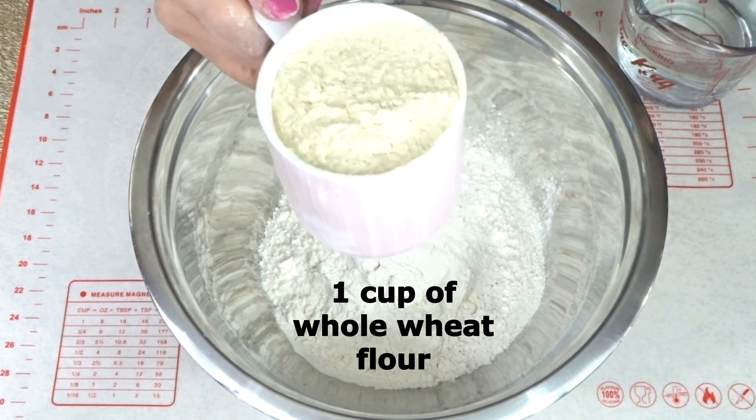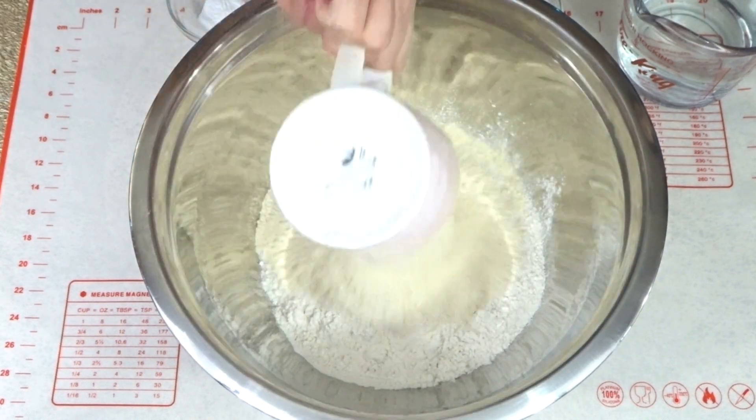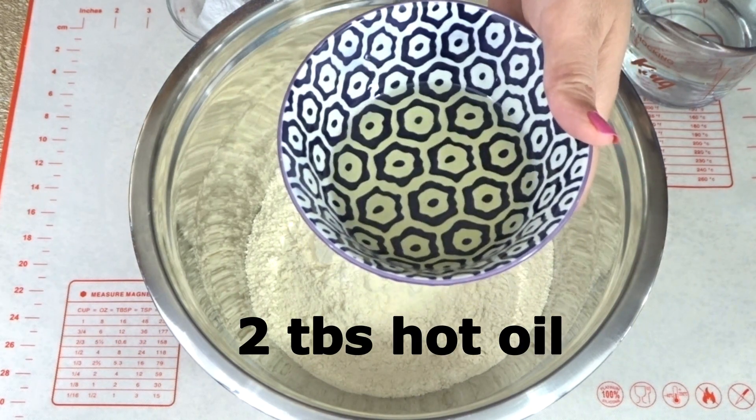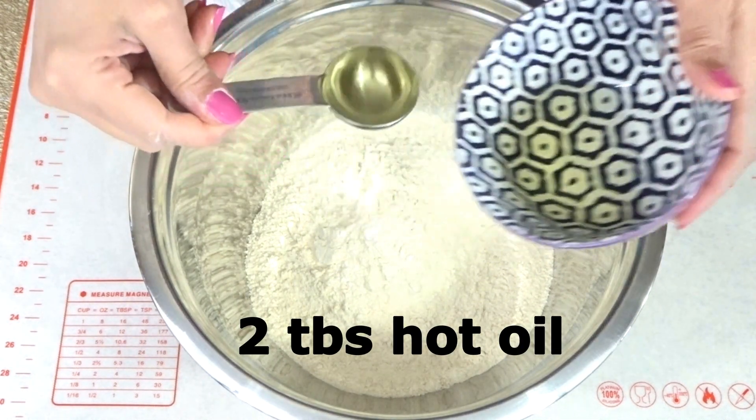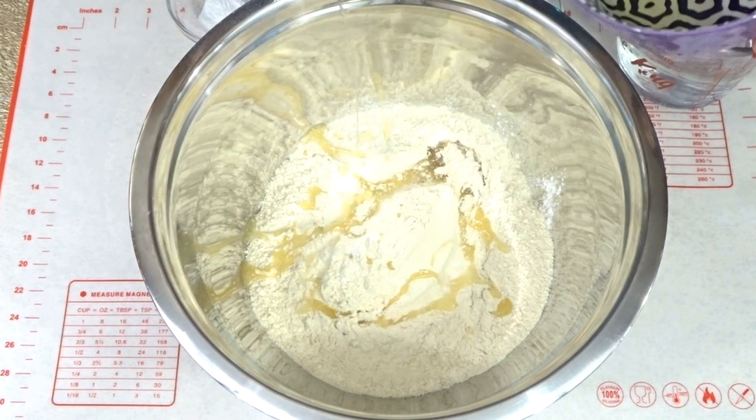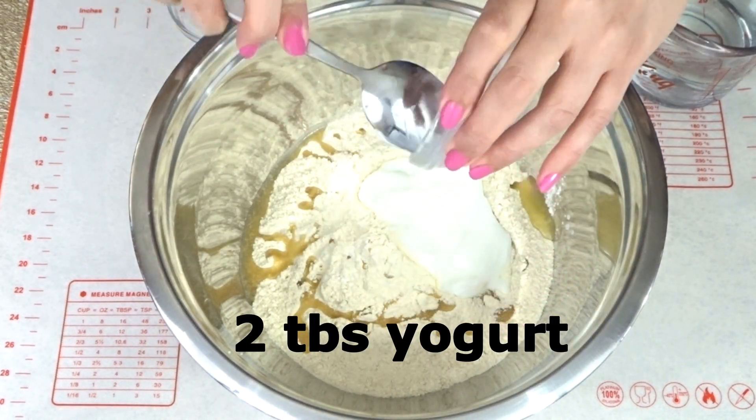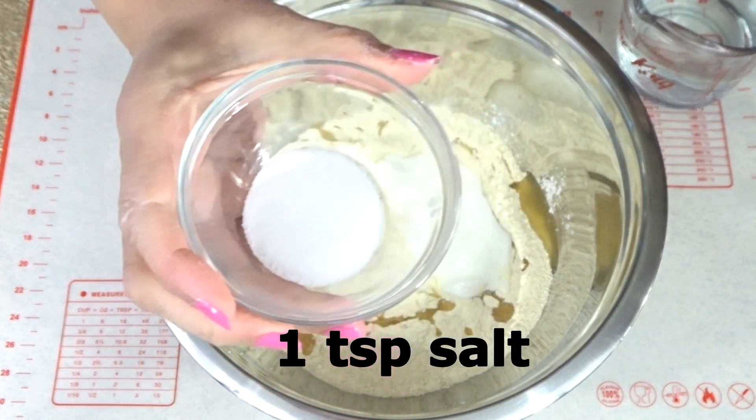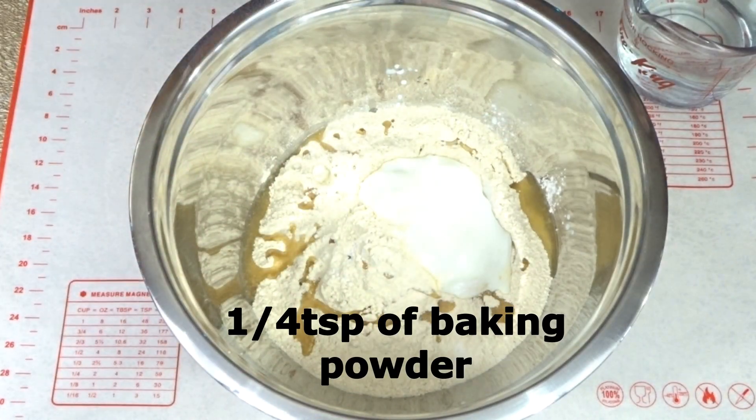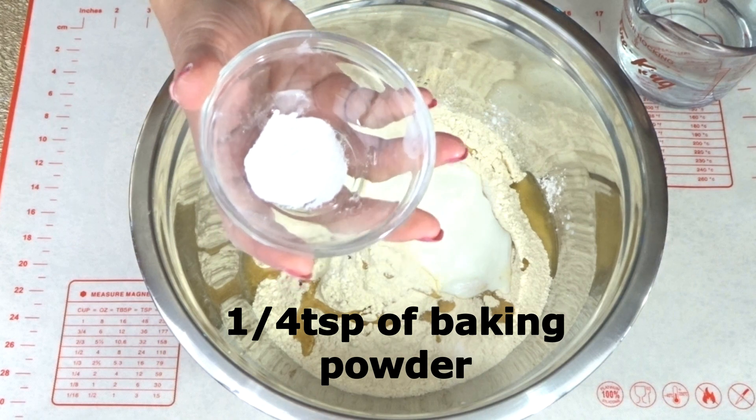And one cup of whole wheat flour, and we need two tablespoons of hot oil, vegetable oil, two tablespoons of plain yogurt, one teaspoon of salt, one fourth teaspoon of baking powder.